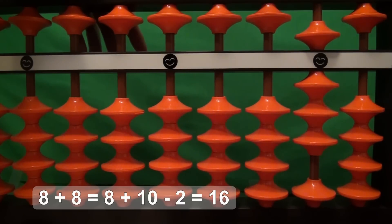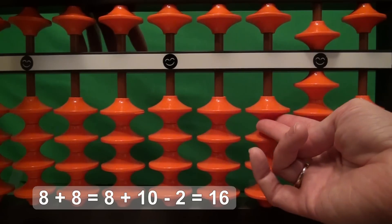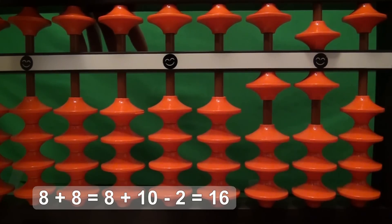We don't have a 5 up here that we can use. So we have to think of adding 8 as adding 10 and taking away 2, because 10 minus 2 is equivalent to 8. So add 10, take away 2. And our answer is 16.